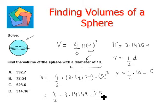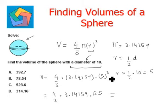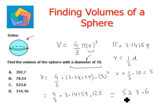When we solve this, 4/3 × 3.14159 × 125 divided by 3 equals 523.6. So this is the final answer, which can be seen in option C.